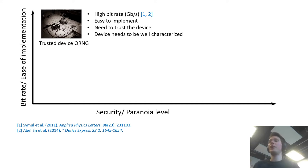Then on the upper left corner of such graphs you'd find the trusted device QRNG. Those have very high bit rates, they're easy to implement with off-the-shelf components but they rely on some assumptions, mainly that you need to trust the measurement device and also you need to trust the source of entropy.